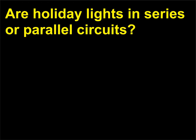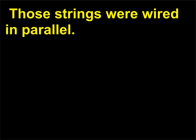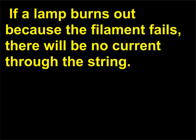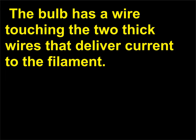Are holiday lights in series or parallel circuits? Many years ago, holiday lights used large bulbs designed to work on 120 volts, and those strings were wired in parallel. Today holiday lights are wired in series so that the tiny bulbs have only low voltages across them. If a lamp burns out because the filament fails, there will be no current through the string, but there will be 120 volts across the failed bulb. The bulb has a wire touching the two thick wires that deliver current to the filament.